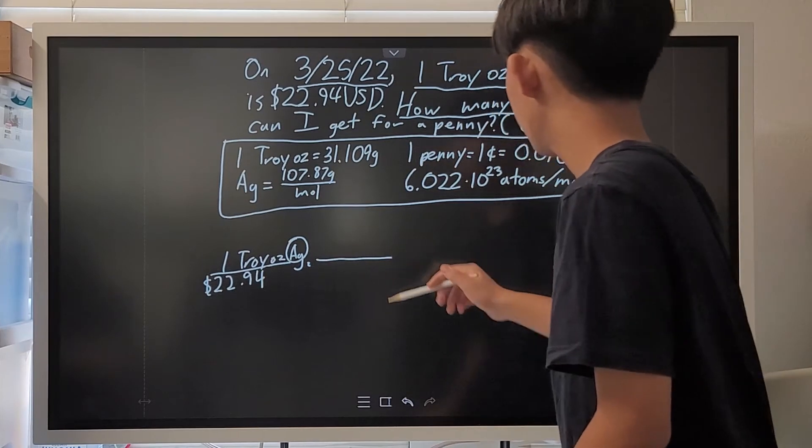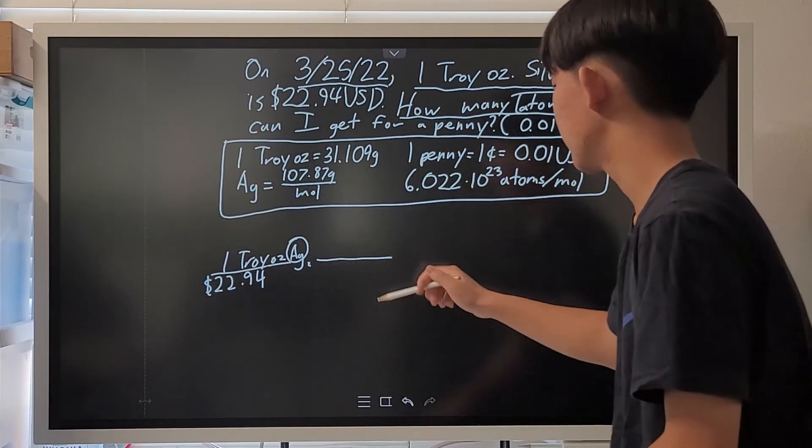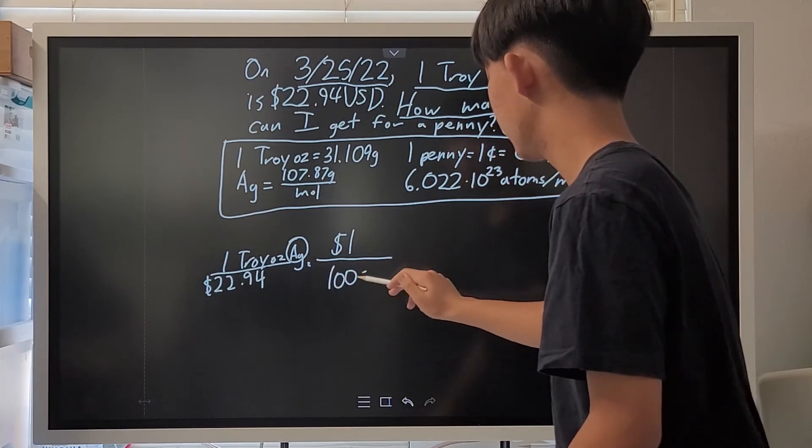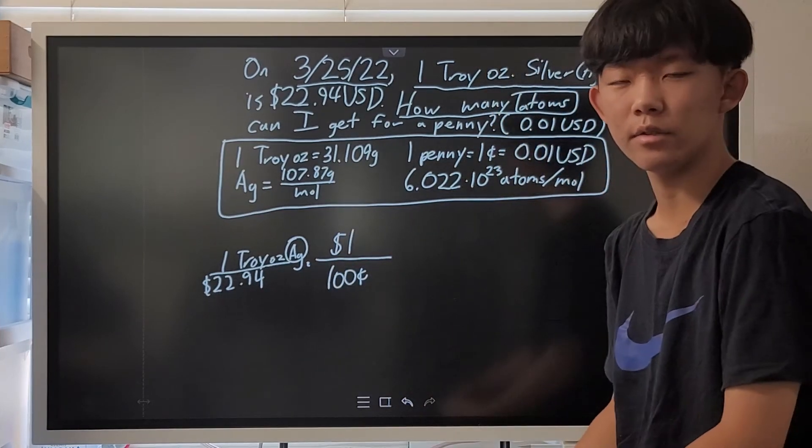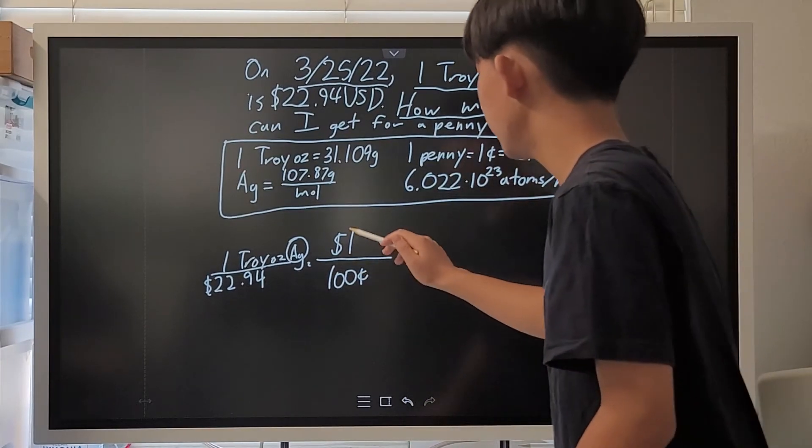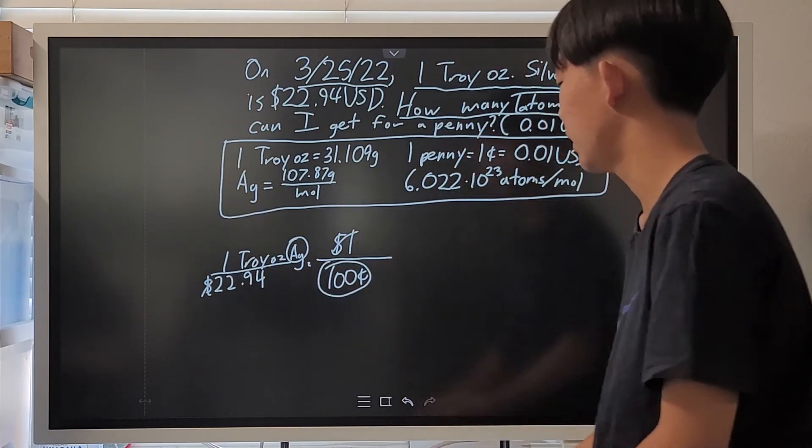So, if we do the math, let's first convert this dollars right here into cents. I'm pretty sure a good amount of you guys know that one dollar is equal to 100 cents. So, here the dollar unit cancels, and we get 100 cents here in the denominator.